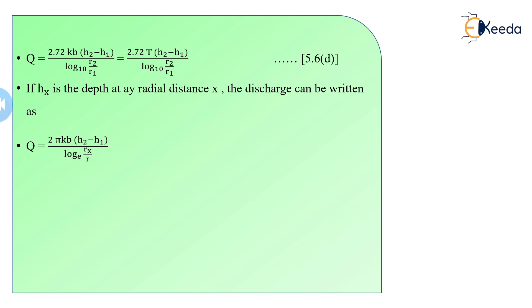I hope you understand this equilibrium equation. There is nothing particularly difficult here because we use Darcy's law as a base. Once we know Darcy's law, we substitute values considering one point on the cone of depression, follow the mathematical steps, and finally obtain the equation useful for finding the discharge from both unconfined and confined aquifers.